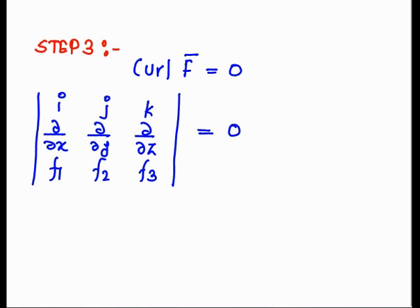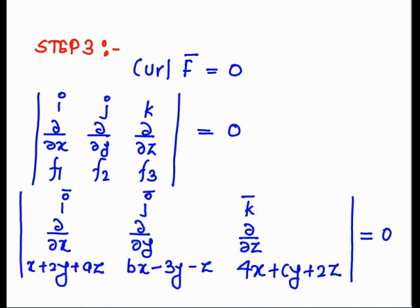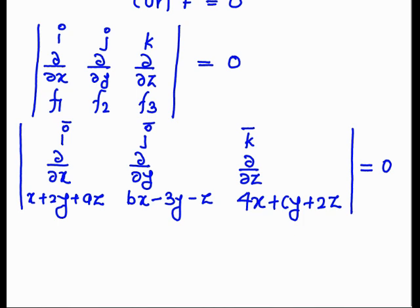Step 3: Since F bar is irrotational, curl of F bar equals 0. We write curl F bar as the determinant with i, j, k and partial derivatives ∂/∂x, ∂/∂y, ∂/∂z applied to f1, f2, f3 equal to 0. Substituting the values: f1 = x + 2y + az, f2 = bx − 3y − z, and f3 = 4x + cy + 2z, all set equal to 0.